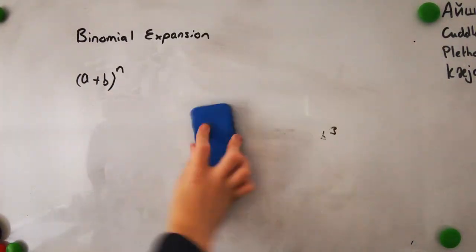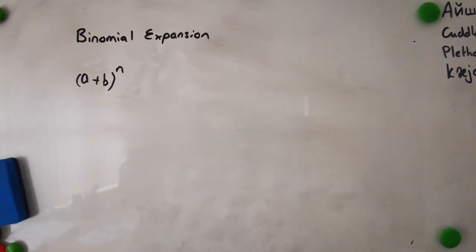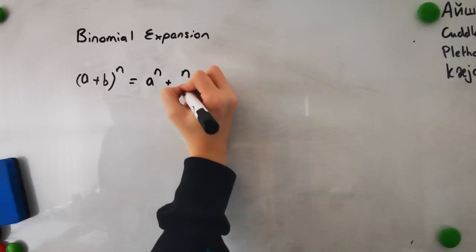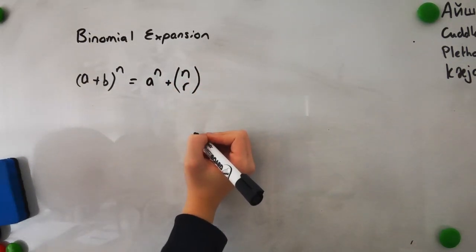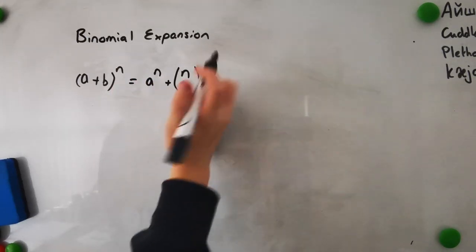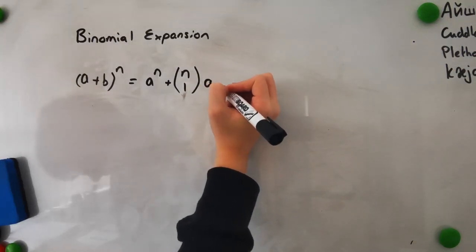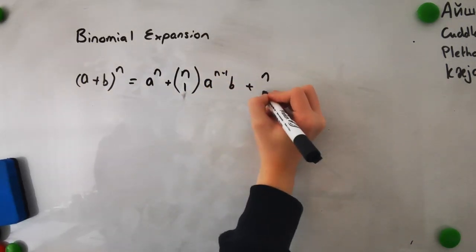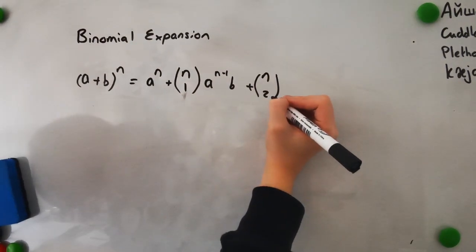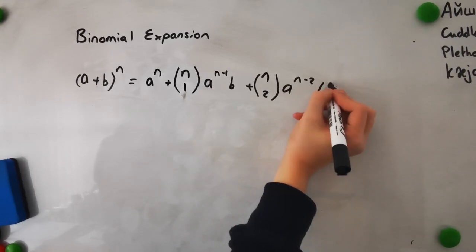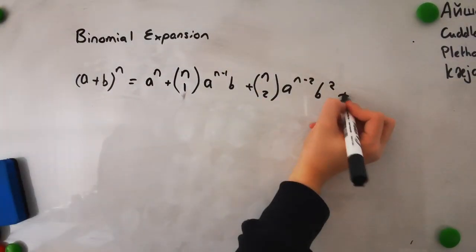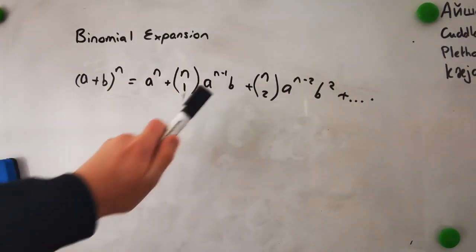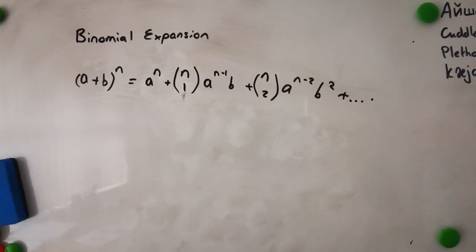Using the formula book — because this is one of the opportunities to use it — it says that (a+b)ⁿ equals aⁿ + (n 1)aⁿ⁻¹b + (n 2)aⁿ⁻²b² and so on. You can see a pattern starting to emerge: the powers of a go n, n-1, n-2, and the powers of b go 0, 1, 2, etc.